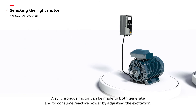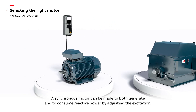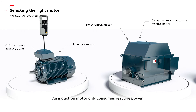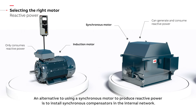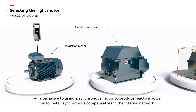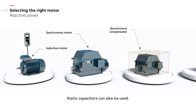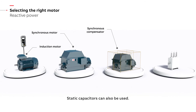A synchronous motor can be made to both generate and consume reactive power by adjusting the excitation. An induction motor only consumes reactive power. An alternative to using a synchronous motor to produce reactive power is to install synchronous compensators in the internal network; static capacitors can also be used.